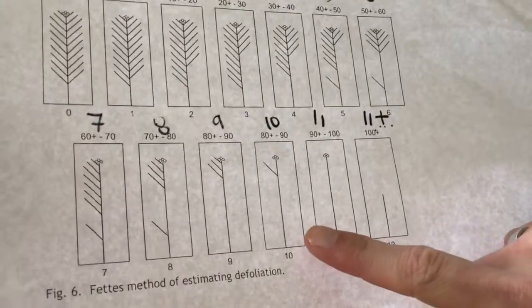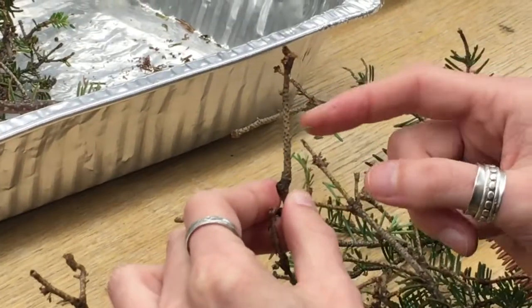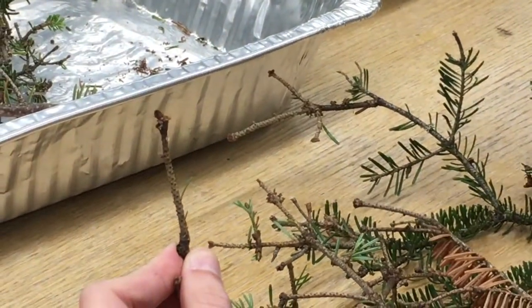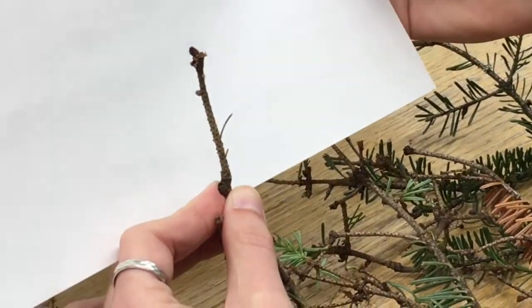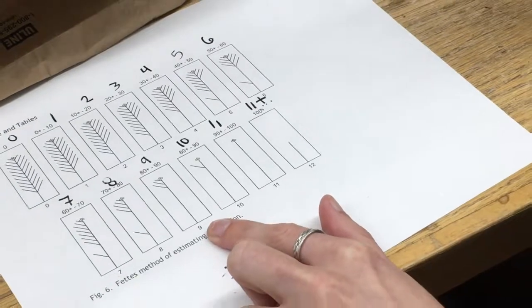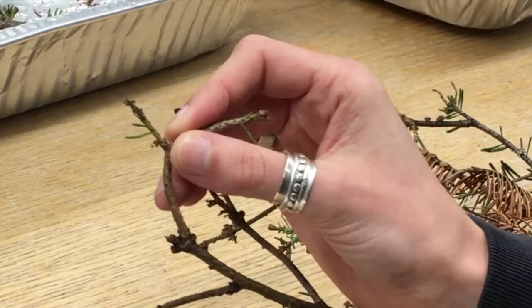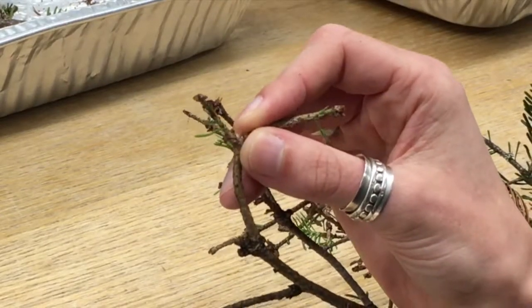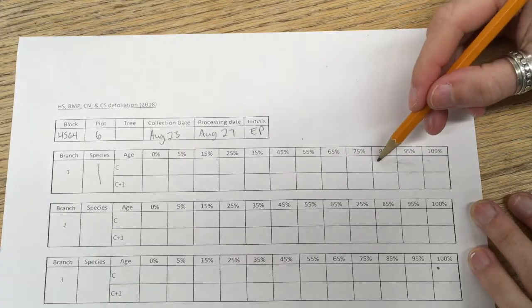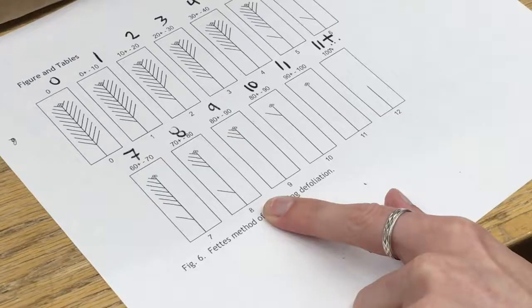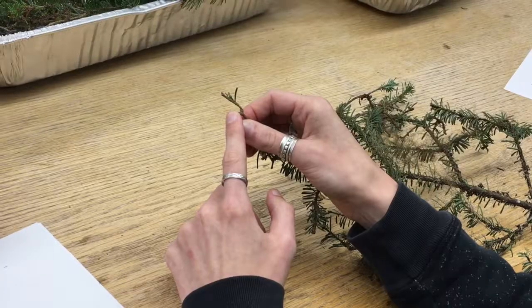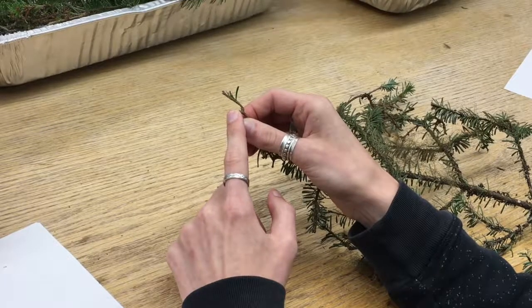This is a visualization of 95% defoliation on the shoot. This is a visualization of 85% defoliation on a shoot.